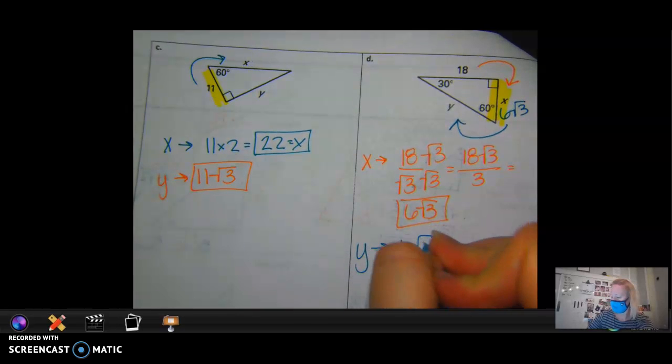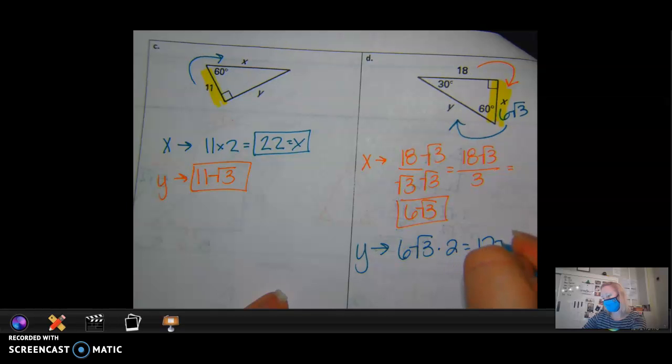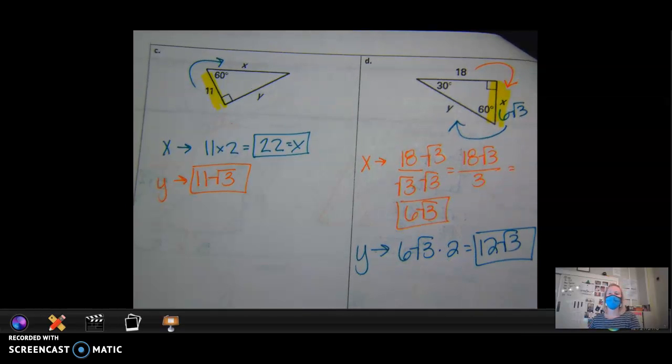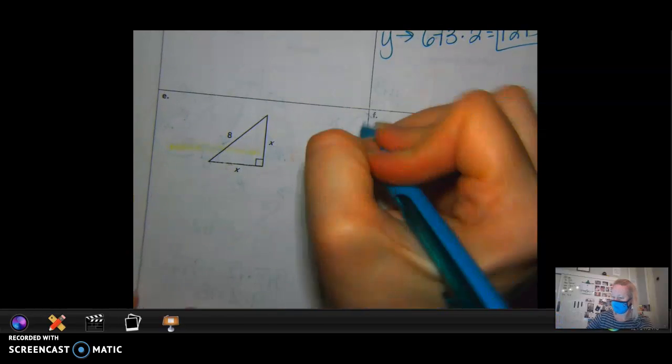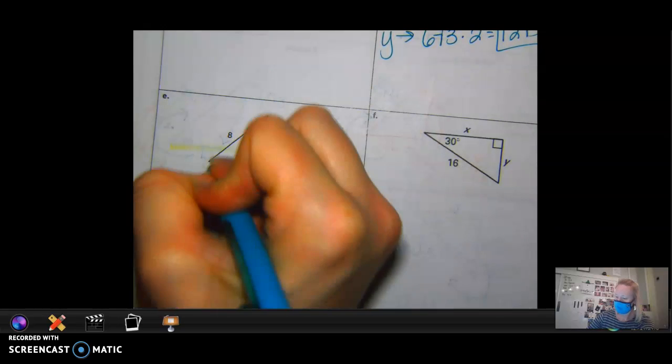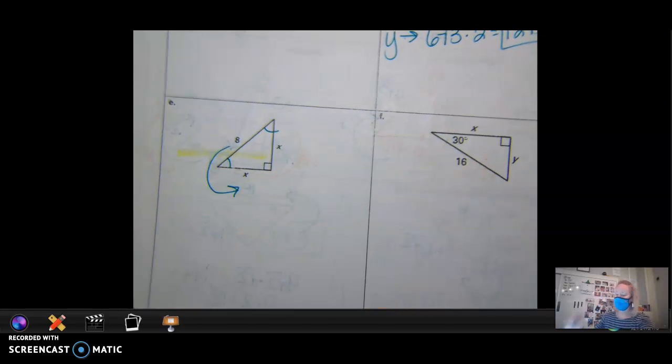Now that I have x, which is 6 square roots of 3, how do I go to get my y? Yep. Double it, multiply by 2. So what does that equal? Perfect, guys. Are we getting this? All right. E, what kind of triangle is E? 45, 45, 90, right? So they gave me the hypotenuse. How do I go backwards to get a leg?